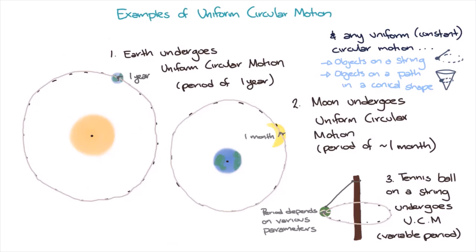Finally, another example is a car on a circular racetrack. If the car is travelling at a constant velocity on a circular racetrack, then it is undergoing uniform circular motion.